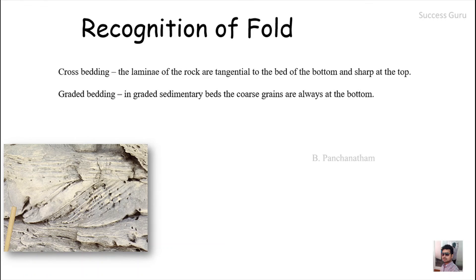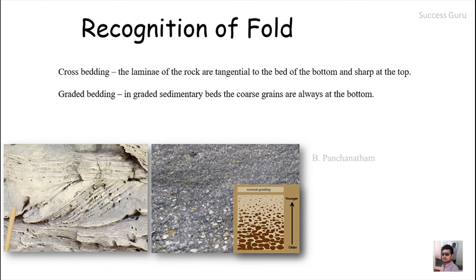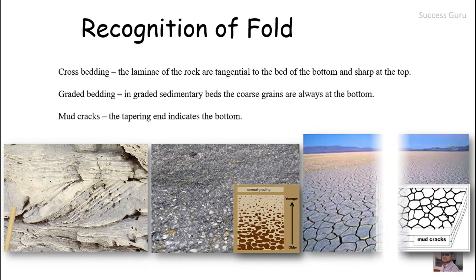The second tool is graded bedding — coarser material is deposited at the bottom and finer material at the top. If this pattern is reversed, it indicates the bed has been inverted, likely due to an isoclinal or recumbent fold. The third tool is mud cracks — cracks formed at the sediment surface widen at the top and taper at the bottom; if reversed, this could indicate an isoclinal fold.